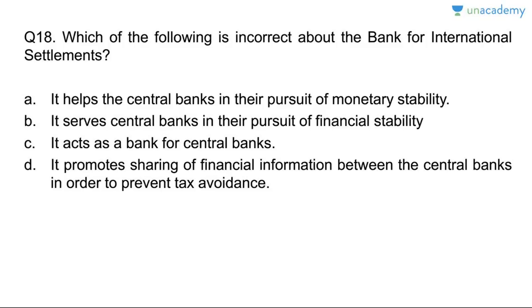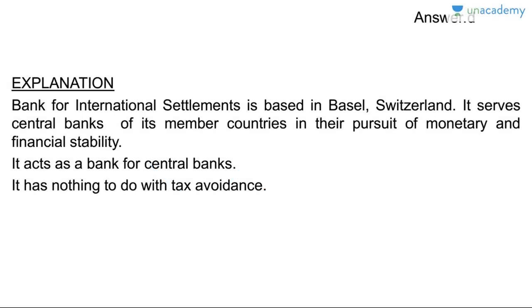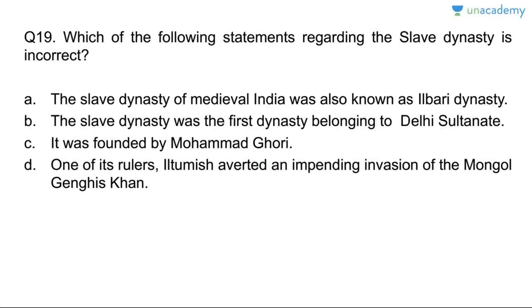Question eighteen: which statement is incorrect about the Bank for International Settlements (BIS)? It helps central banks pursue monetary stability — correct. It acts as a bank for central banks — correct. It promotes sharing of financial information between central banks to prevent tax avoidance — no, it has nothing to do with tax avoidance. Answer is D. BIS is based in Basel, Switzerland, and serves as a central bank for its member countries.